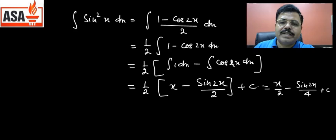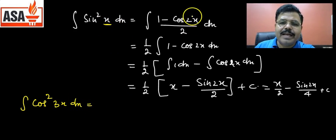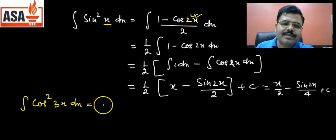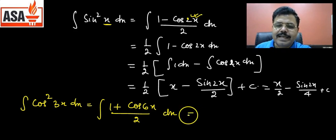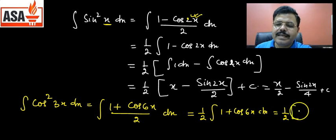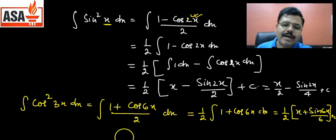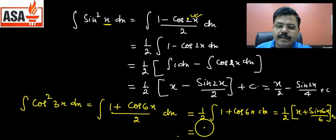Similarly, for ∫cos²(3x) dx: since x becomes 3x, the double-angle becomes 6x. So we write (1 + cos6x)/2. Taking 1/2 outside: (1/2)∫(1 + cos6x) dx = (1/2)[x + sin6x/6] + c = x/2 + sin6x/12 + c. So whenever a squared function appears, write it in this form first — there is no other way.